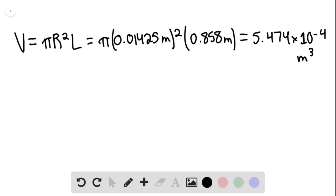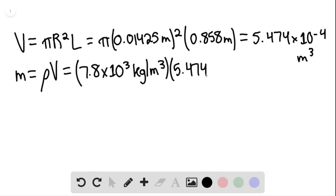We know that the mass of any object is the density times the volume, and so this would be equal to 7.8 times 10 to the third kilograms per cubic meter, that would be the density, multiplied by 5.474 times 10 to the negative four meters cubed.